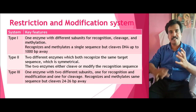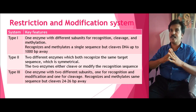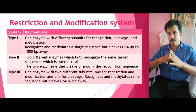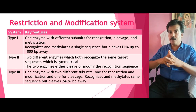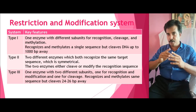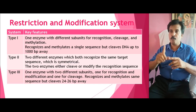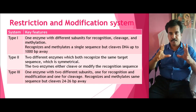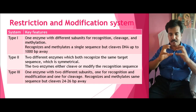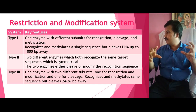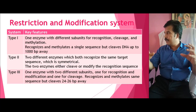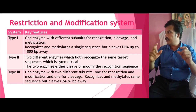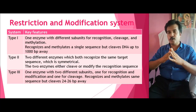Type 3 is similar to Type 1 in that it is also a single enzyme, but it has only two subunits. One subunit is for recognition and modification, and one is for cleavage. So in Type 3, a single enzyme carries two subunits: one subunit for recognition and modification, and another for cleaving. However, it recognizes and modifies the sequence but cleaves the DNA about 24 to 26 base pairs away.